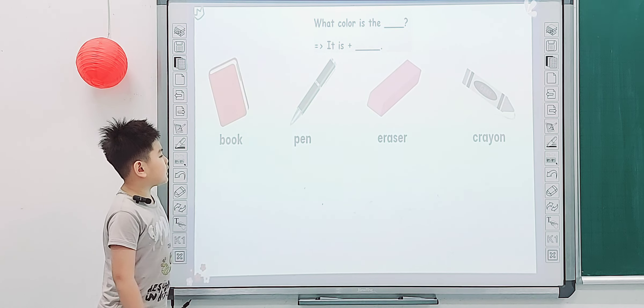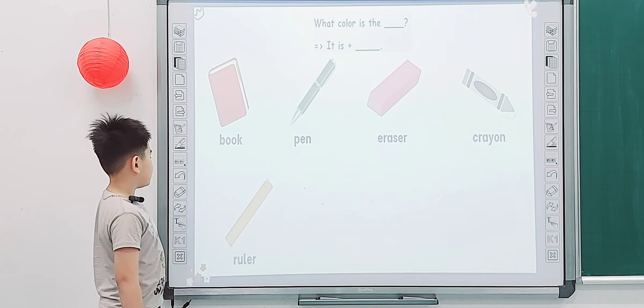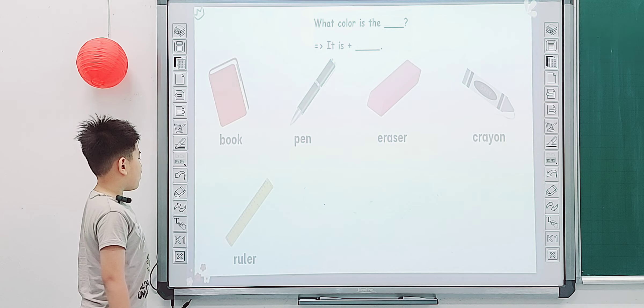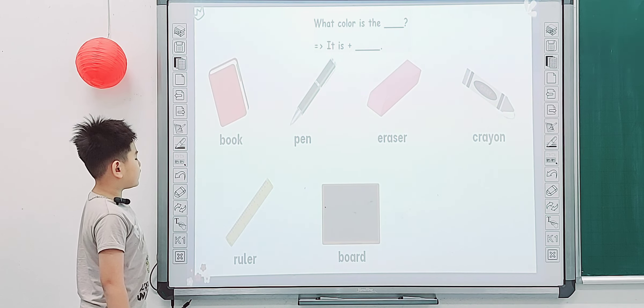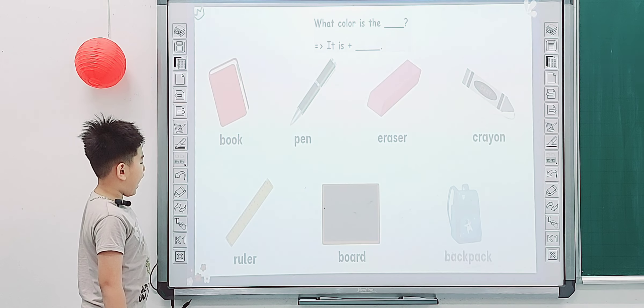What color is the crayon? It is gray. Yeah, and what color is the ruler? It is yellow. What color is the board? It is black.